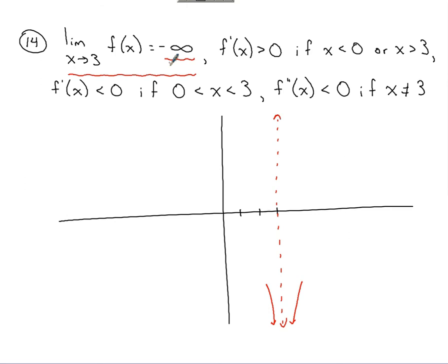Next we move our attention to first derivative stuff. First derivative stuff gives us direction. When f prime of x is greater than 0, that means f prime is positive, so we know our function is increasing. If f prime of x is less than 0, that's where the first derivative is negative, and when that's negative, we know the function is decreasing.